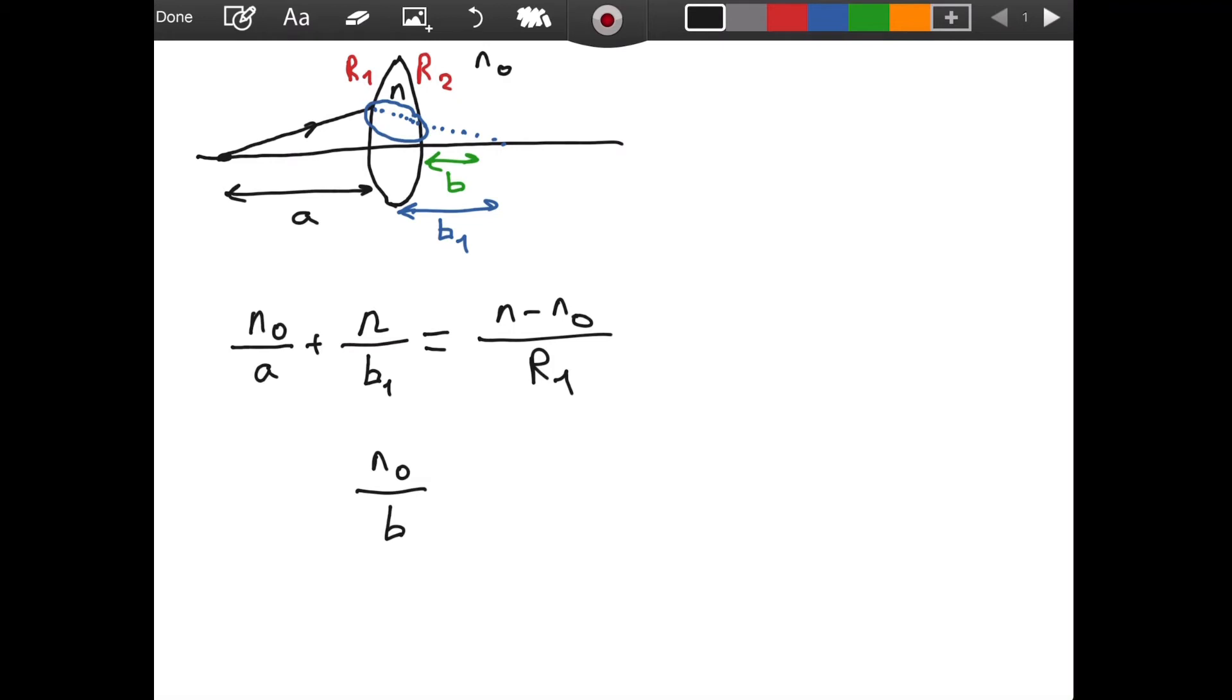You might be wondering, okay, we got b, but where does the n₀ come from? Why isn't it n, perhaps? It was n here. Well, I want you to understand, in the first refractive case, we had something like this. I'm not going to draw the second refractive surface. We had our n here and n₀ here.